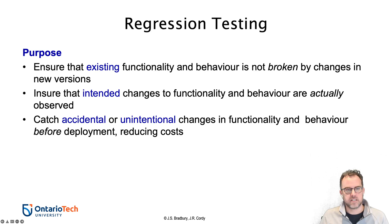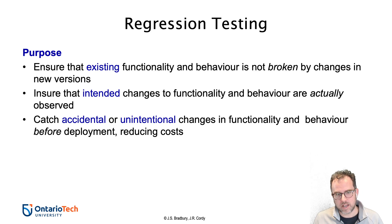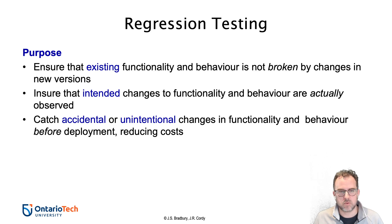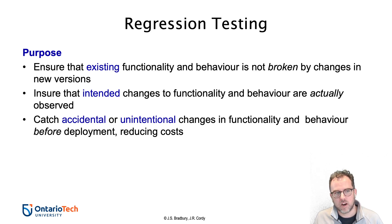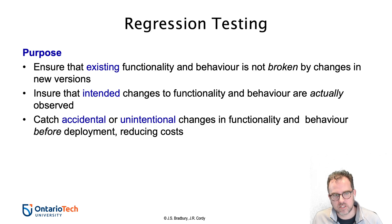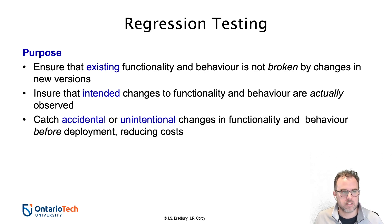Regression testing is basically all about testing your software over the lifetime of the software after it's already been deployed. The idea is trying to make sure that the software behavior doesn't regress — it doesn't go back to a previous state where there were certain bugs or abnormal behavior. So the idea is to ensure that existing functionality and behavior aren't broken in new versions, that any changes in functionality that are intended are actually observed, and that any accidental or unintended changes that could lead to a bug are caught before deployment, reducing costs.